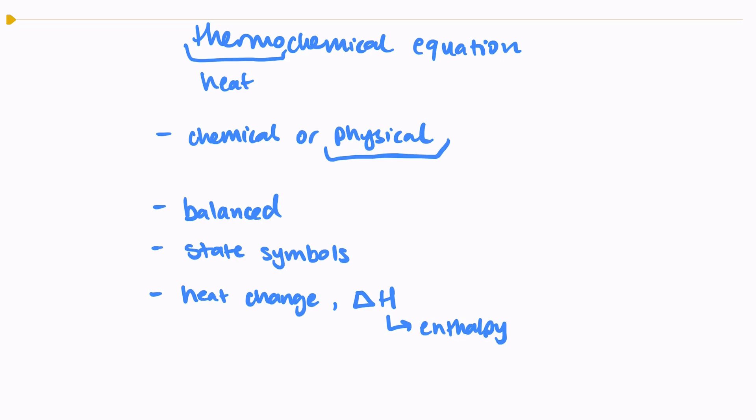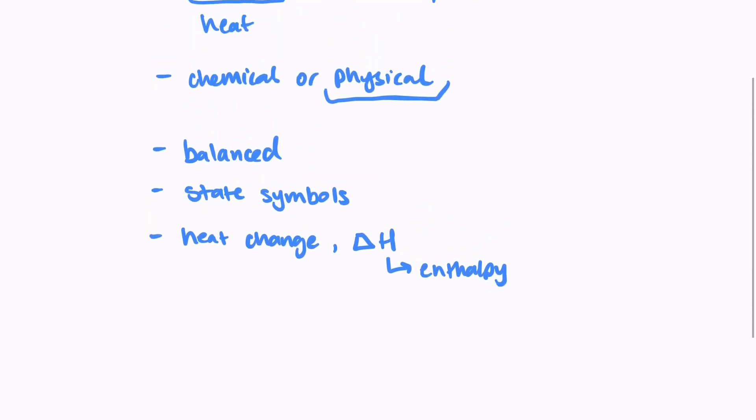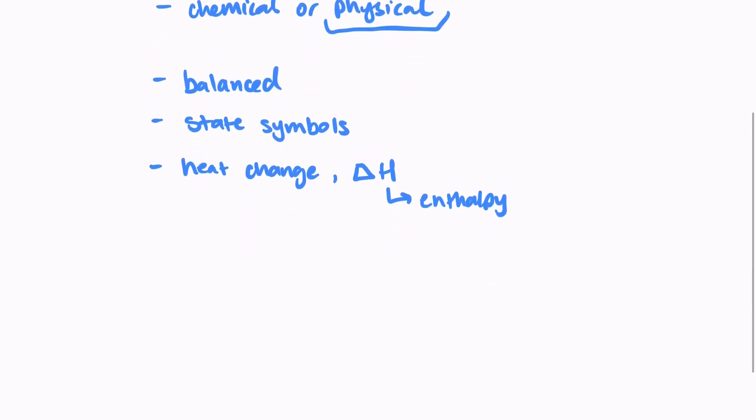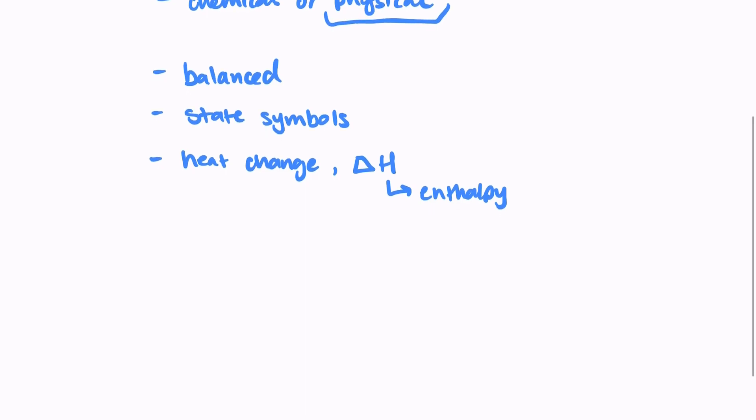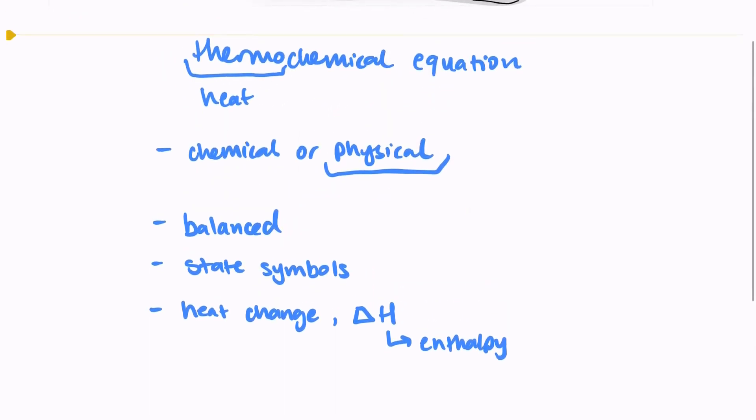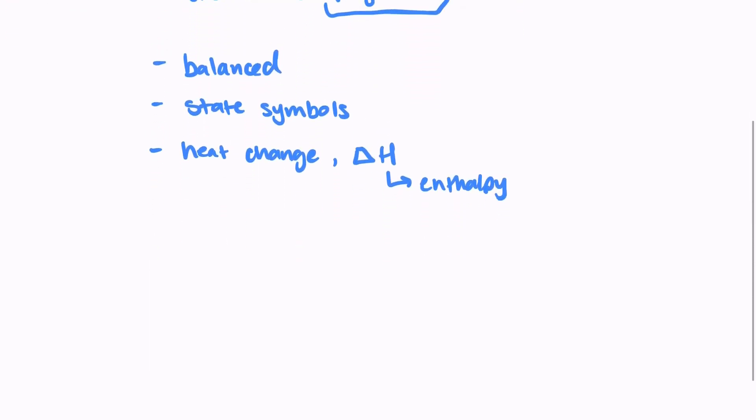There's a few different types of enthalpy, and I will go over those in another video. So let's look at a physical thermochemical equation. If we wanted to look at solid water turning into liquid water, or just ice melting, that's a specific type of enthalpy called enthalpy of fusion. So I could write out the thermochemical equation by writing H2O solid yields H2O liquid. So it is balanced.